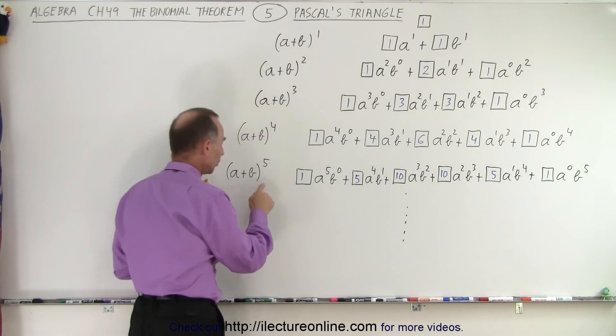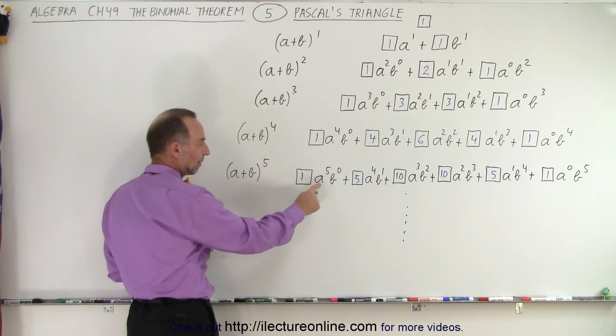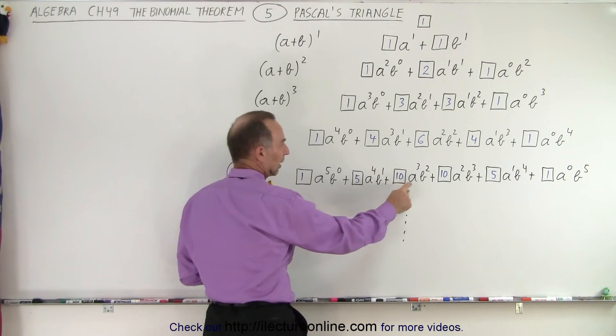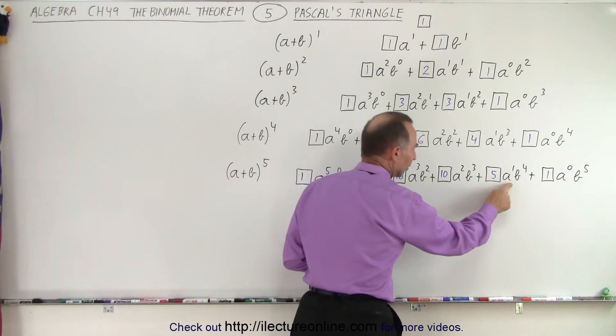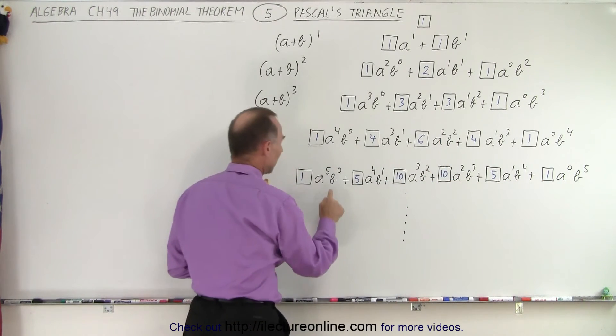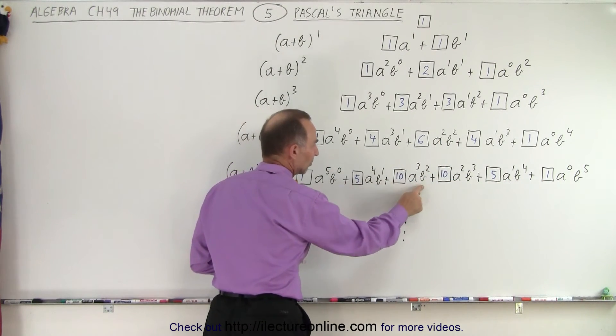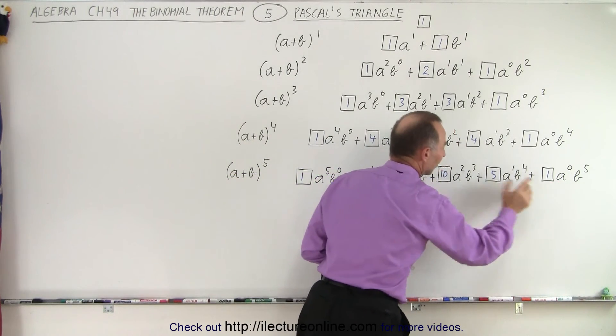And again, with the exponents, since we have a plus b to the fifth power, we have a to the fifth, a to the fourth, a cubed, a squared, a to the first, a to the zero, and b to the zero, b to the first, b squared, b cubed, b to the fourth, b to the fifth.